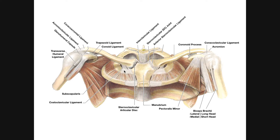Here's the first rib and here's the costal cartilage of the first rib. Remember that the costal cartilage of that first rib articulates completely with the manubrium. This is the second rib, and you can see the second costal cartilage. Notice the second rib's costal cartilage articulates partially with the manubrium above and the body of the sternum below, so the articulation of that second rib spans over the sternal angle.